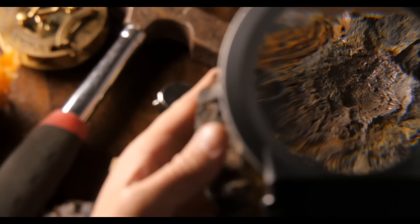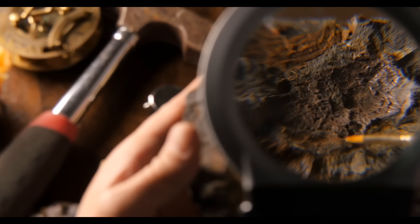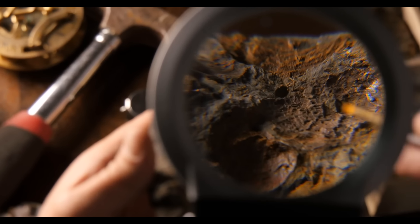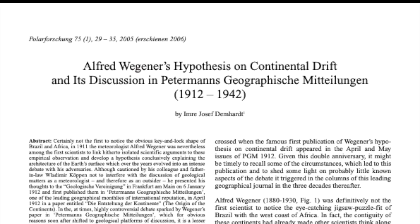To test his theory, Wegener looked at the rocks and fossils on the coasts of Africa and South America, and he found that they were remarkably similar. In 1912, he published his findings in his theory of continental drift.